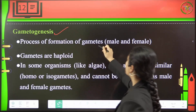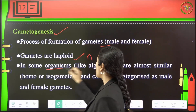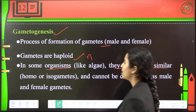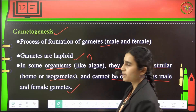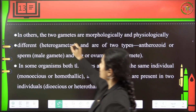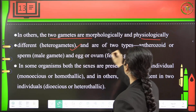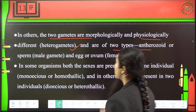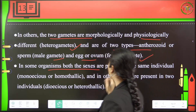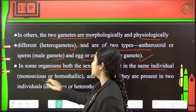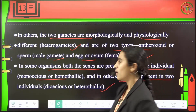Gametogenesis is the formation of gametes — either male or female — and they are haploid, consisting of N sets of chromosomes. In some organisms like algae, they are almost similar — called isogametes or homogametes — and cannot be categorized as male or female gametes. In others, the two gametes are morphologically and physiologically very different — they are called heterogametes — of two types: antherozoid (sperm or male gamete) and egg or ovum (female gamete). In some organisms, both sexes are present in the same individual — they are monoecious or homothallic. In others, they are present in two separate individuals — dioecious or heterothallic.